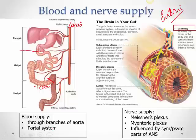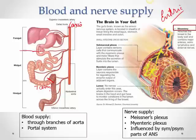The portal vein carries nutrient-rich blood to the liver. Hepatic veins then push the blood into the inferior vena cava and back into the right atrium. This is the venous drainage via the portal system.